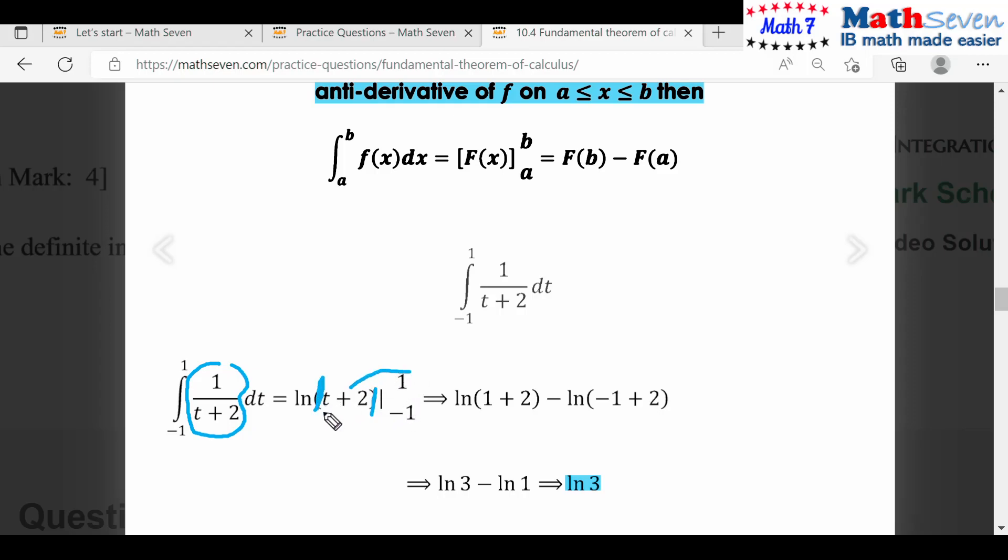We put it in brackets because we know that if we put in one it will be three, and we put minus one and it will be one. There's subtraction, meaning ln three minus ln one.